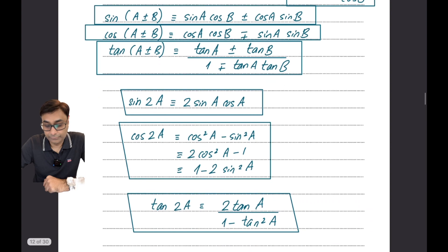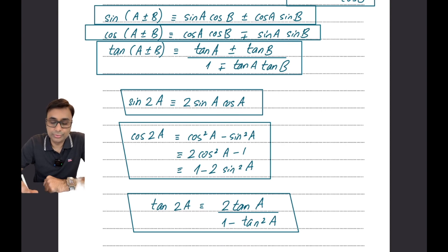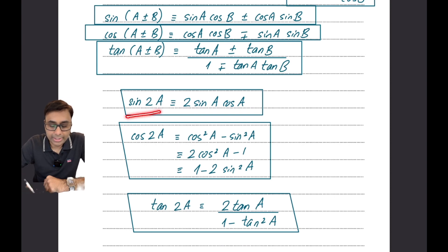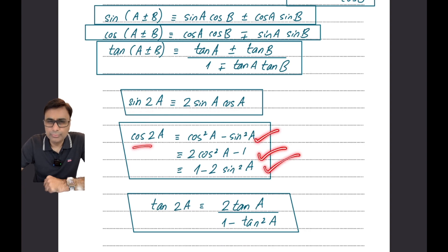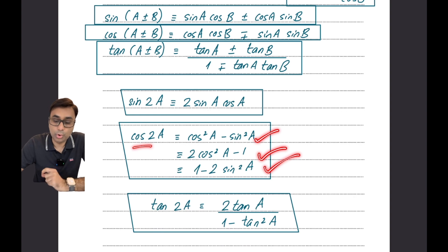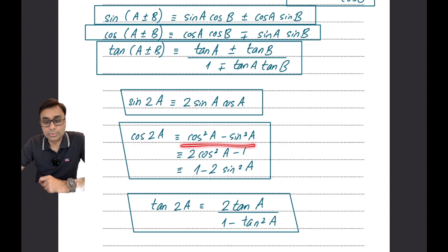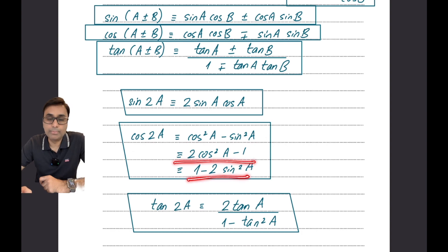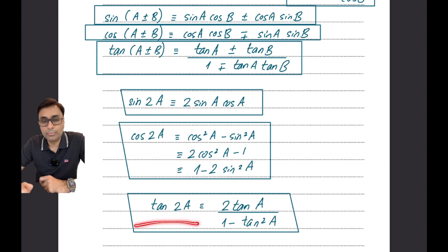A few very important identities are the double angle formulas. All of these are given to you. Sin 2a = 2 sin a cos a. Cos 2a can be written in three different forms: cos²a - sin²a, or 2cos²a - 1, or 1 - 2sin²a. This can create confusion when proving an identity — you have to think smartly about which form to use. And tan 2a = 2 tan a / (1 - tan²a).